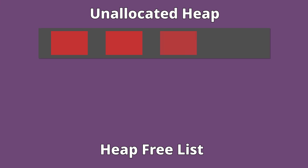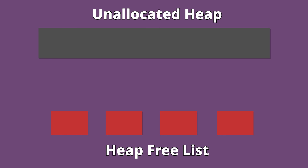Pretend for a second that a user allocated exclusively 32-byte fragments, and pretend that they freed them all too. They could in theory create a free list that uses all the memory of the heap and contains exclusively 32-byte chunks. What happens if, after all of this, they want to allocate a 64-byte chunk? They can't. The memory in the heap has been completely fragmented into unusable 32-byte pieces.